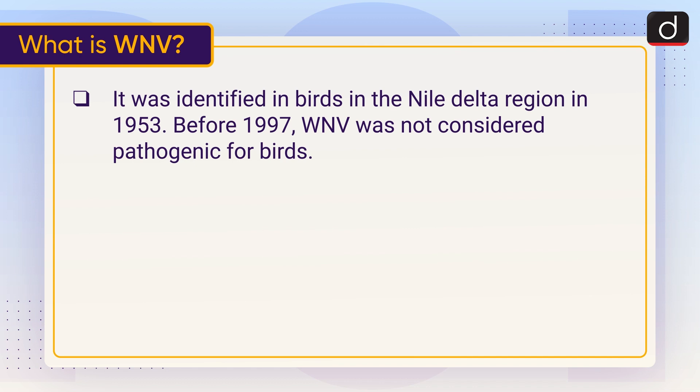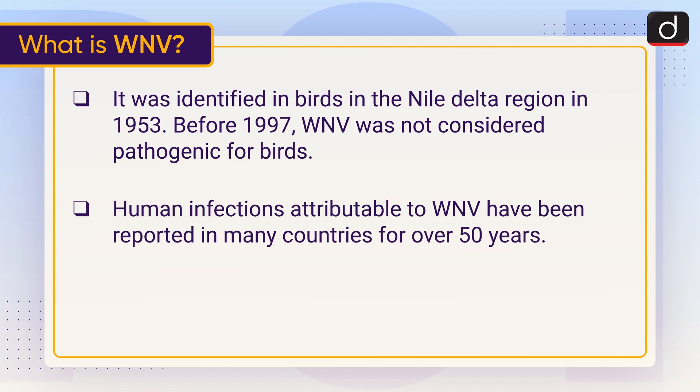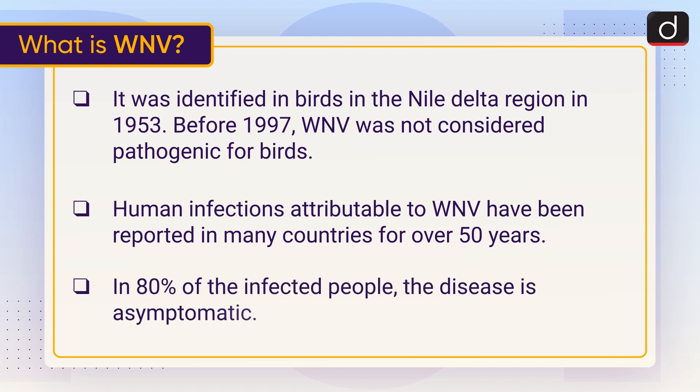It was identified in birds in the Nile Delta region in 1953. Before 1997, WNV was not considered pathogenic for birds. Human infections attributable to WNV have been reported in many countries for over 50 years. In 80 percent of the infected people, the disease is asymptomatic.